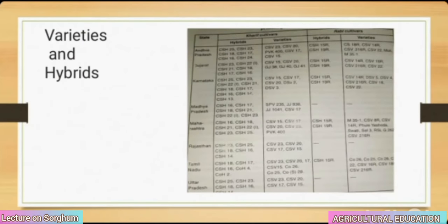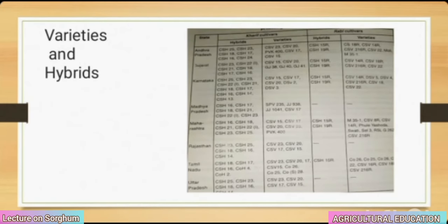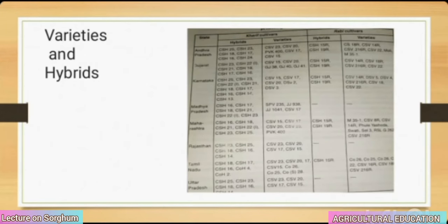Varieties and hybrids for Andhra Pradesh: hybrids CSH 25 and CSH 23; varieties CSV 23 and CSV 20.